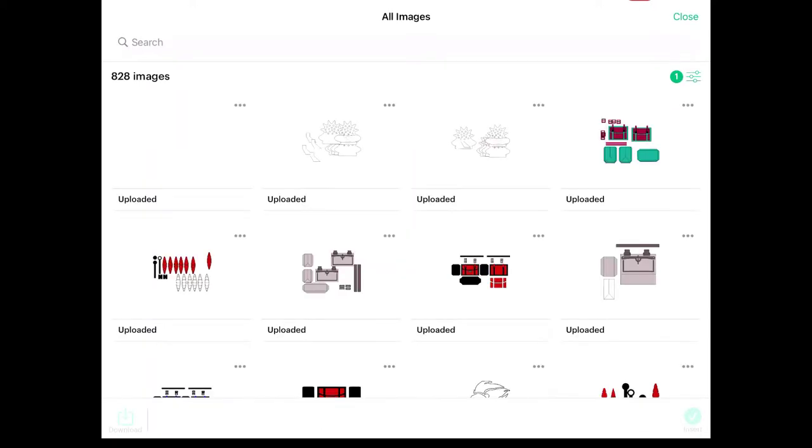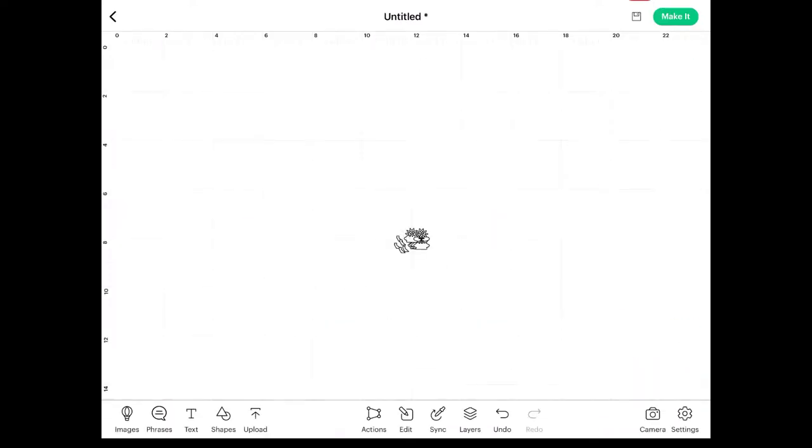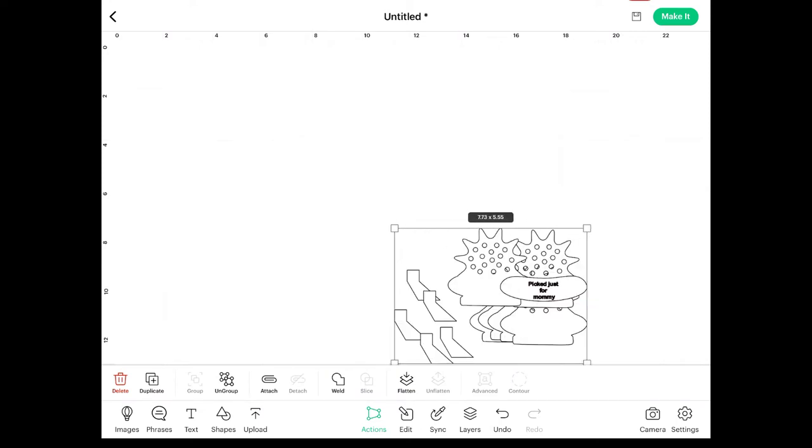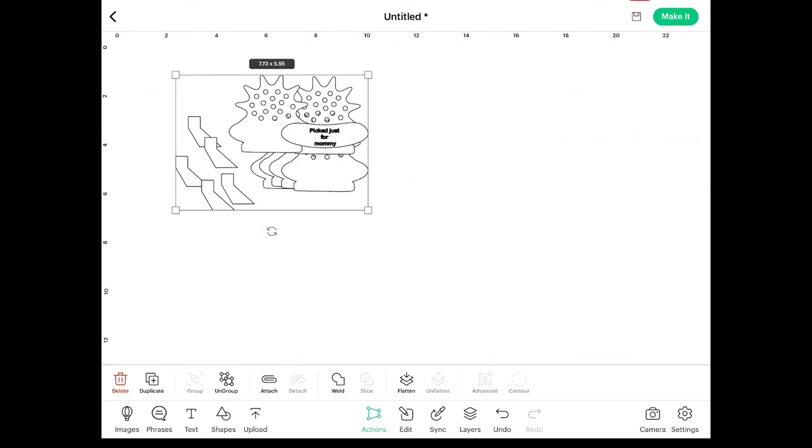Now the file is in Design Space, so what we need to do is open the image and it'll come onto our canvas. You will notice the file is very small, so quickly grab the corner so that you can expand it. You'll want to make sure that your size lock is on so that the file stays symmetric.